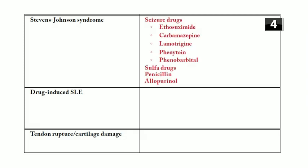Stevens-Johnson syndrome is associated with antibiotics (sulfonamides and penicillins) and seizure drugs including ethosuximide, carbamazepine, lamotrigine, phenytoin, and phenobarbital, plus allopurinol. Drug-induced lupus mnemonic: SHIPP — Sulfonamides, Hydralazine, Isoniazid, Procainamide, Phenytoin. Fluoroquinolones are associated with tendonitis, tendon rupture, and cartilage damage — think of Achilles tendonitis after ciprofloxacin.